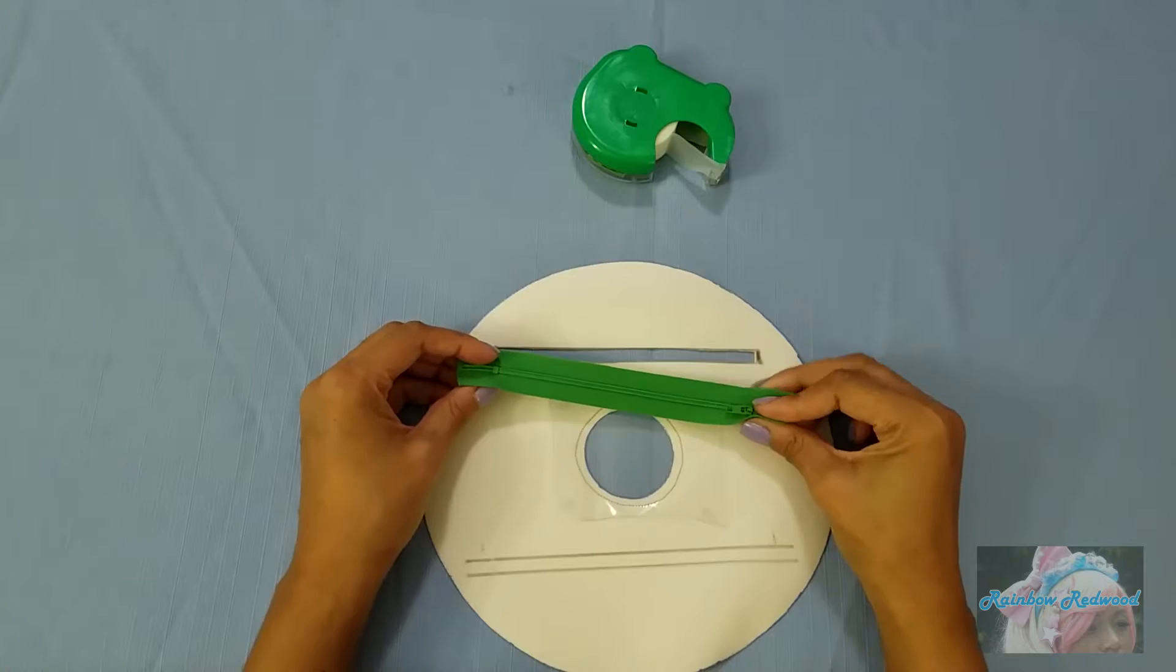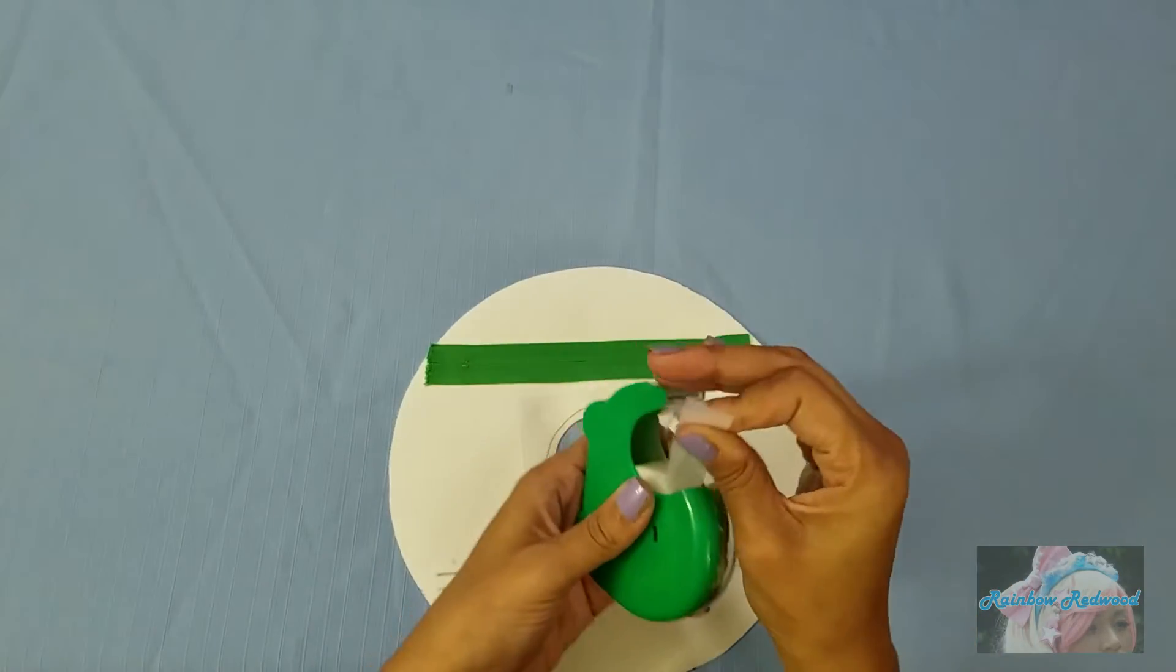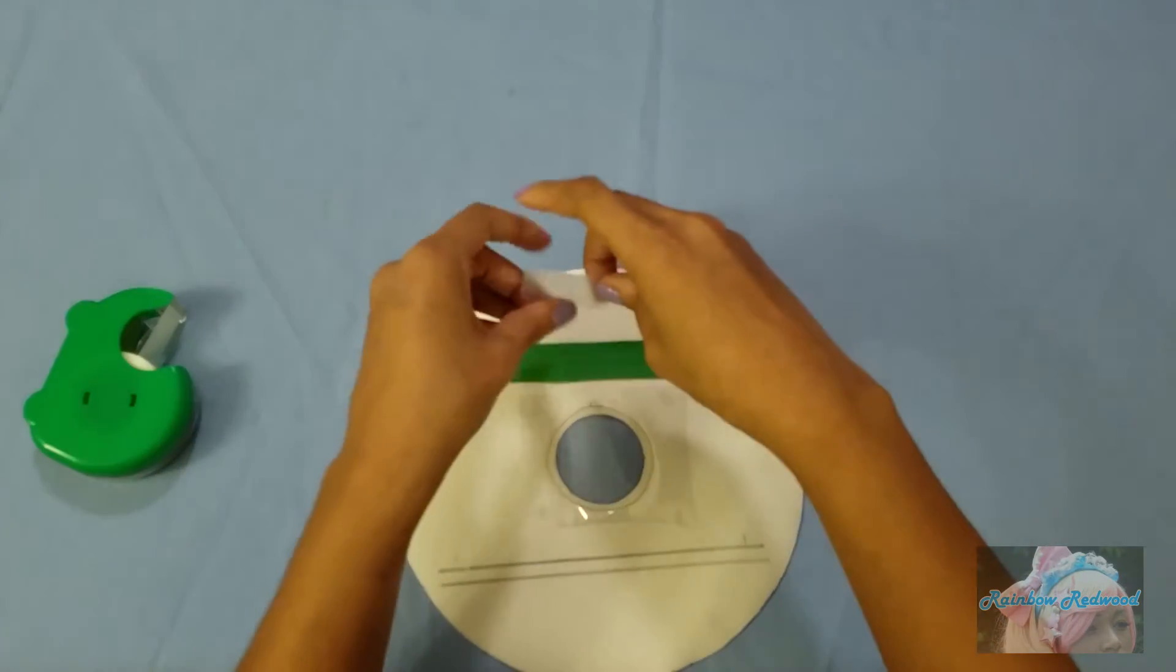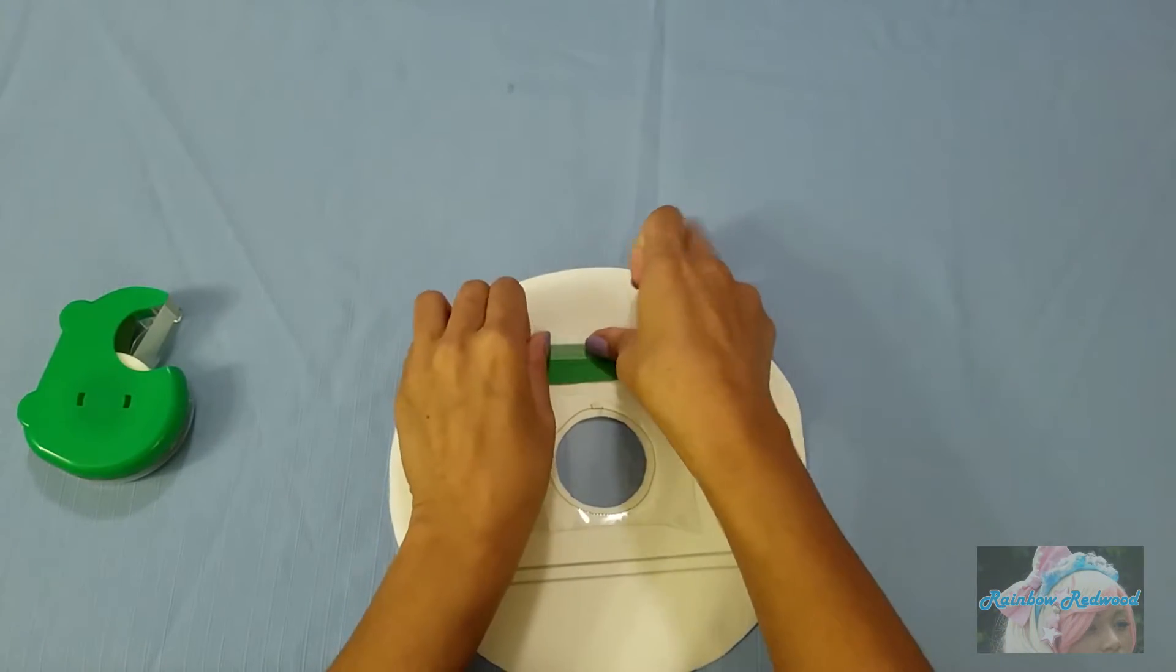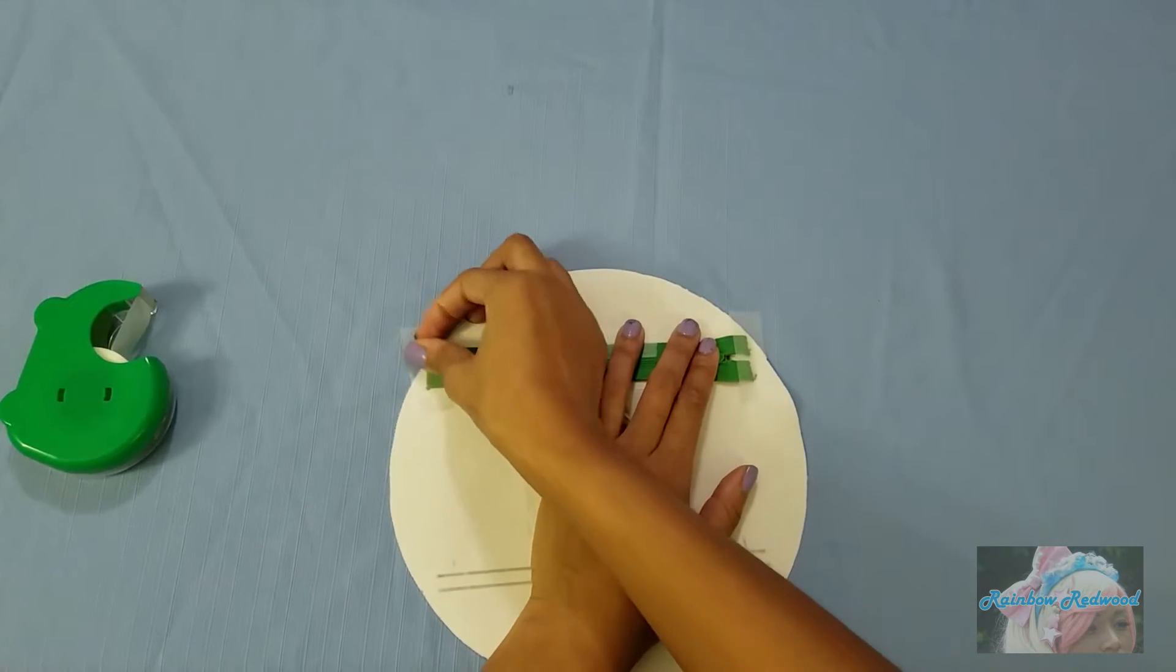Take your zipper and place it face down in that little hole. Then to keep your zipper in place, you're going to just tape it down on one of the long sides and both of the ends just to keep it in place.